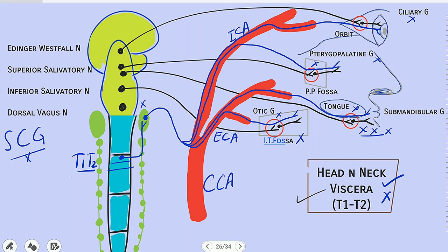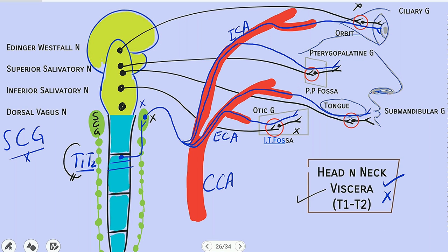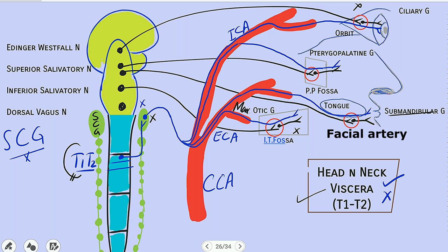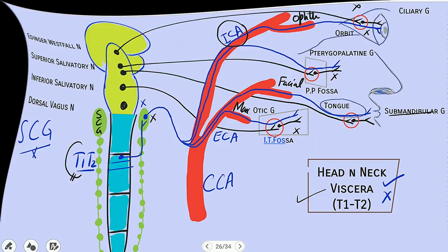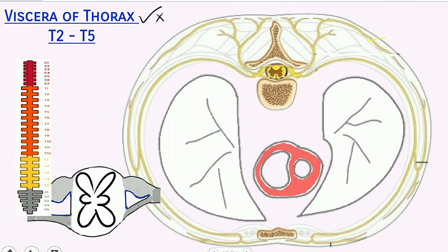To summarize the head and neck sympathetic supply: the pre-ganglionic neuron is in T1 and T2, synapses at the superior cervical ganglion, and the post-ganglionic neuron then follows the carotid arteries — the maxillary artery guides fibers to the otic ganglion, the facial artery to the submandibular ganglion, and the ophthalmic artery to the ciliary ganglion. Now for viscera of the thorax and how it gets sympathetic innervation.